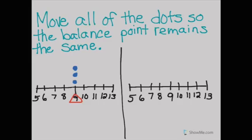So here we see a dot plot that has three blue dots right above this nine. The nine is the balance point, so we're going to think of the dot plot as a scale, a balanced scale kind of like a teeter-totter. Right now with all three dots right in the middle, it is balanced.